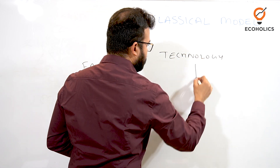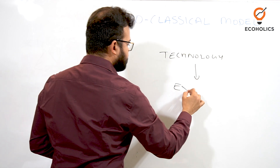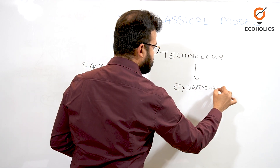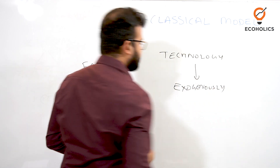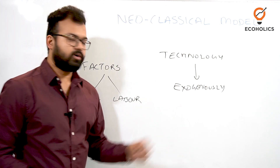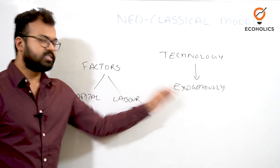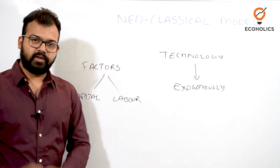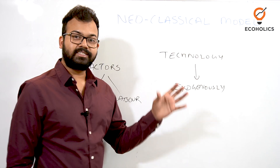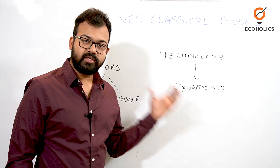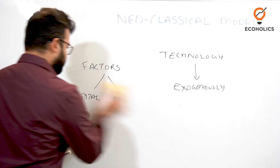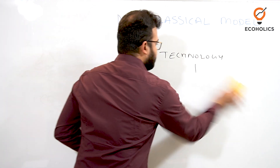Technology is exogenously determined in this model. Exogenously means it is outside the model — it is affecting the model but it is not determined within the model. This will be explained with a simple equation.